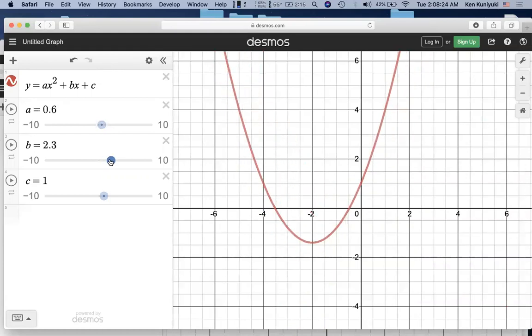You can vary b. You can vary c. And notice that c only affects vertical shifting. We're going to make note of that.